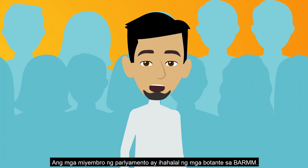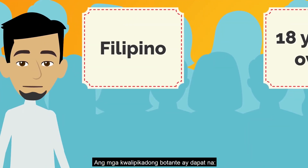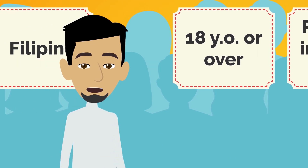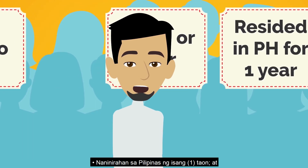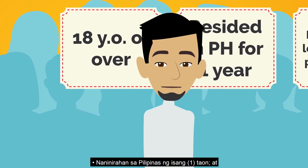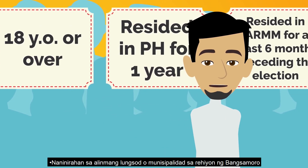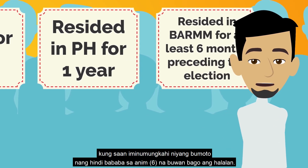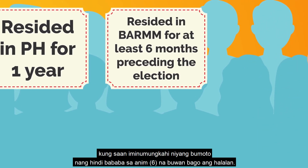The members of Parliament will be elected by voters in the BARM. Qualified voters should be a Philippine citizen not otherwise disqualified by law, 18 years of age or over, resided in the Philippines for one year, and resided in any city or municipality in the Bangsa Moro region wherein he proposes to vote for at least 6 months immediately preceding the election.